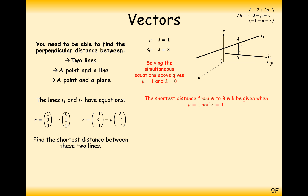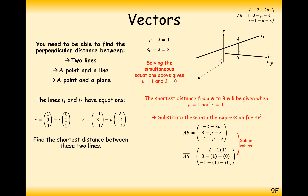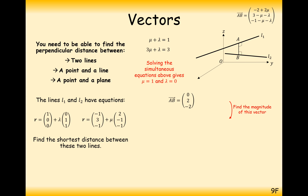Now we just have simultaneous equations. Solving these simultaneously gives μ = 1 and λ = 0. Substituting these back into the A-to-B vector gives (0, 2, -2). Working out the magnitude of this vector gives 2√2. So the shortest distance between the two lines is 2√2. We needed to do the dot product twice — once to ensure it meets line 1 at a right angle, and once for line 2.